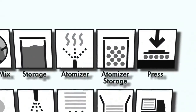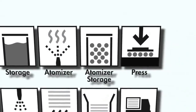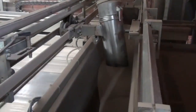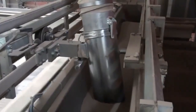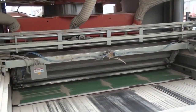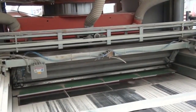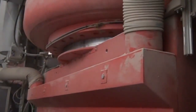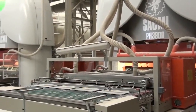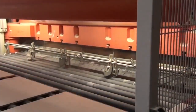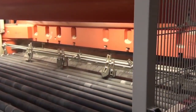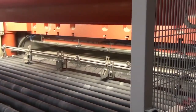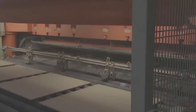The atomized powder is fed into a holding vat just behind the press. The vat releases measured quantities of atomized powder into a tray, which distributes the powder evenly into the mold. A force of 340 to 400 kilograms per square centimeter is applied using a large hydraulic press. The combination of high pressure and residual moisture turns the powder into a solid mass.